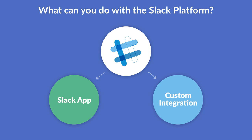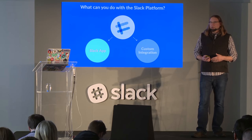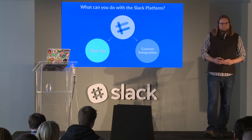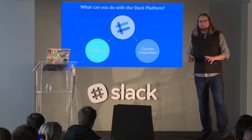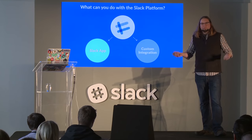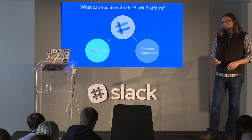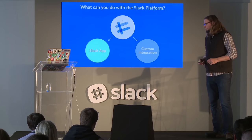First, I want to draw a distinction. When we talk about integrations with Slack, there are actually two different types of things you can do with the Slack platform. The first are Slack apps, which allow you to write an integration and share it with other teams. Custom integrations, on the other hand, work very much the same way, but they're designed just for your team — to connect Slack to the bespoke systems that are unique to your team in particular. All the things I talk about work equally well under each of these types.